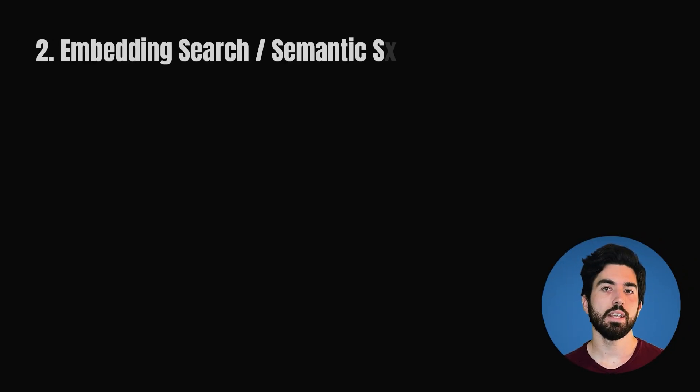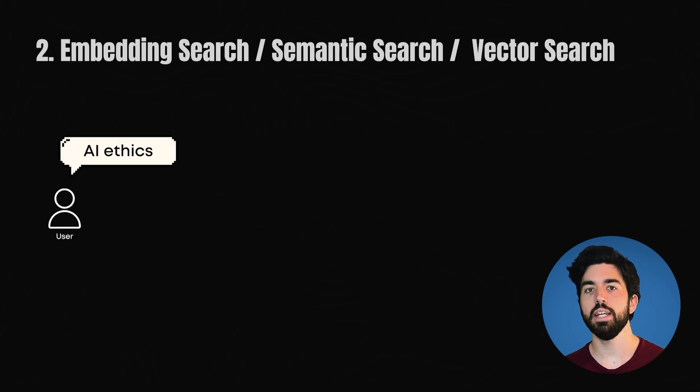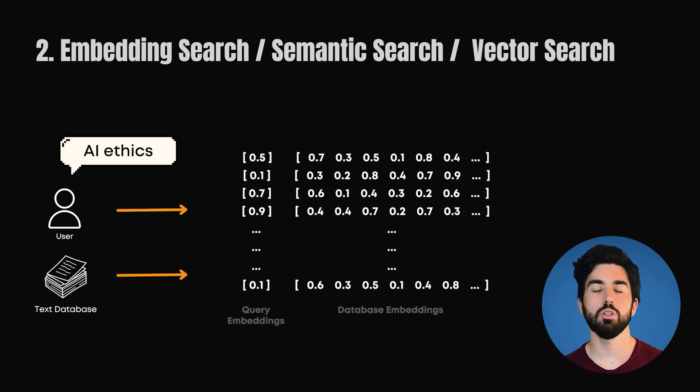Embedding search, or semantic search or vector search, all the same thing, transforms both the query, like our AI ethics query and our documents, into high-dimensional vectors, which we call embeddings.